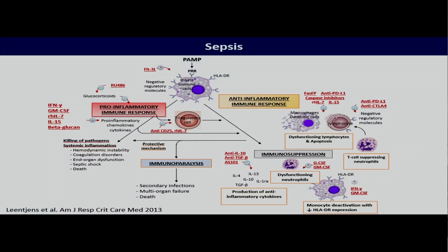We have pro-inflammatory cells, we have anti-inflammatory cells, we have a degree of hyper-inflammation, sometimes in parallel with immunosuppression, and sometimes even immunoparalysis. And there are lots of different cells involved and different biomarkers and mediators.